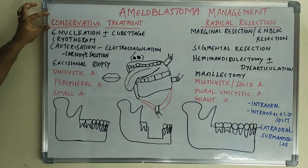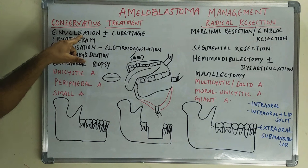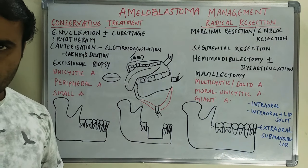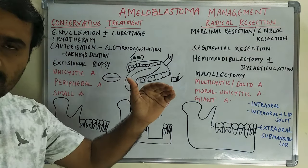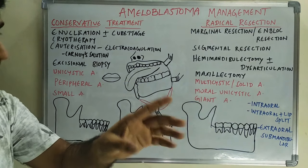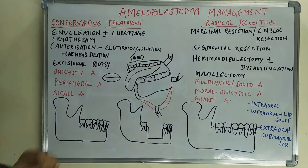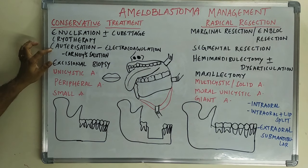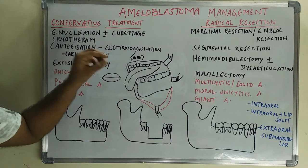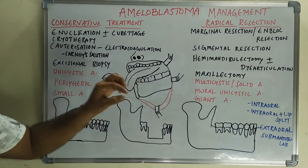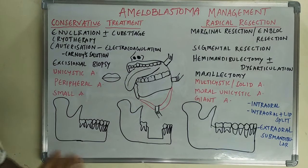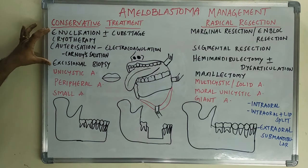In conservative treatment, we include enucleation plus or minus curettage — that means enucleation only or with the addition of curettage. Then we have cryotherapy and cauterization. In cauterization, we can use electrocoagulation or Carnoy's solution, and excisional biopsies. These are the options available in conservative treatment.